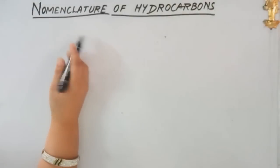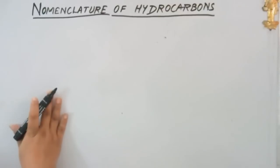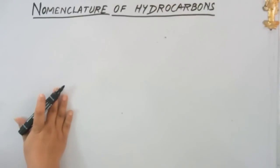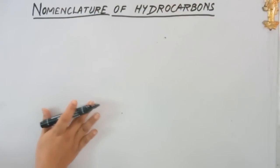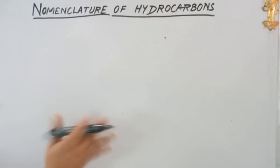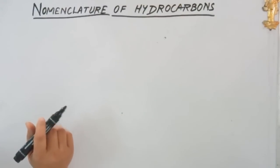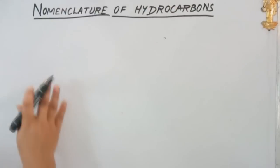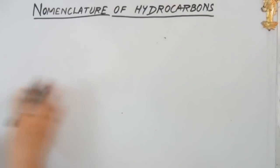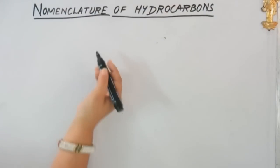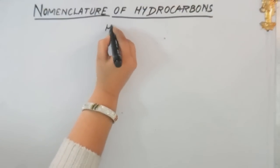Hello guys. As we know, carbon is capable of making millions of compounds. It is not possible to remember the names of all million compounds, so in this video I'm going to tell you how to name straight-chained hydrocarbons. First of all, let us recall what we mean by hydrocarbons.